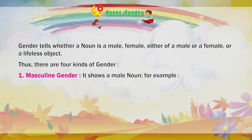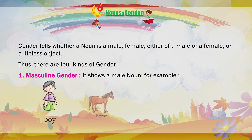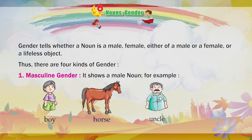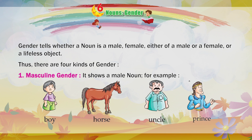Masculine Gender: It shows a male noun. For example: boy, horse, uncle, prince.